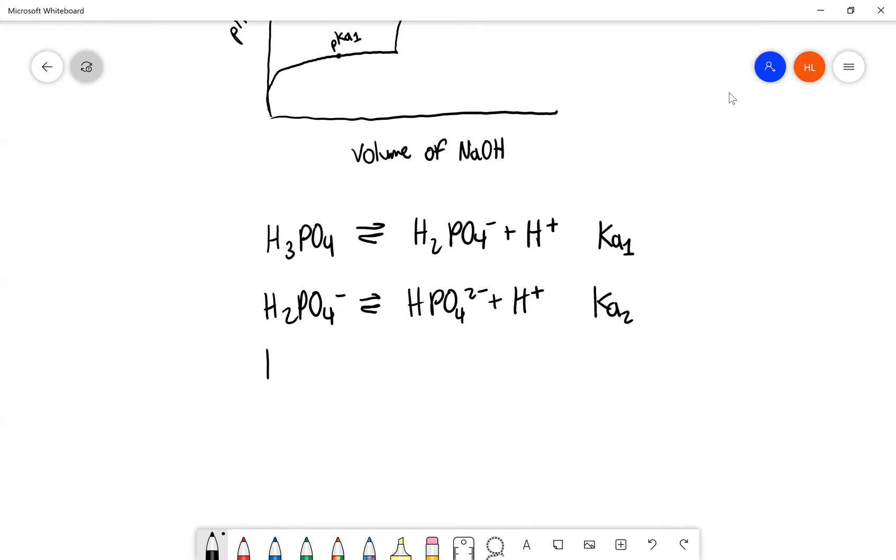And we have HPO4 2- goes to PO4 3- plus H+, and this would have the Ka of the third, so the third Ka.